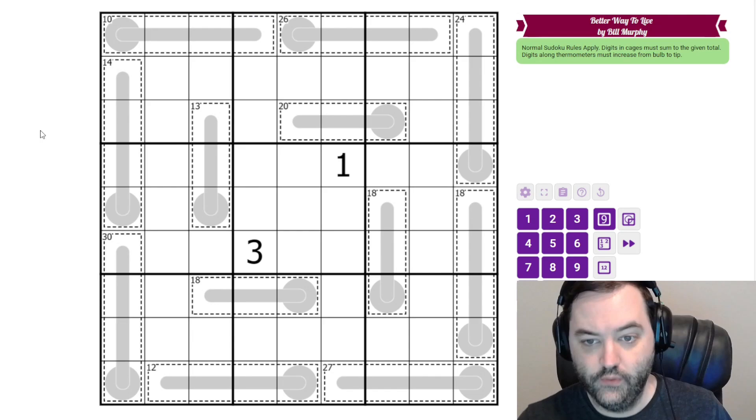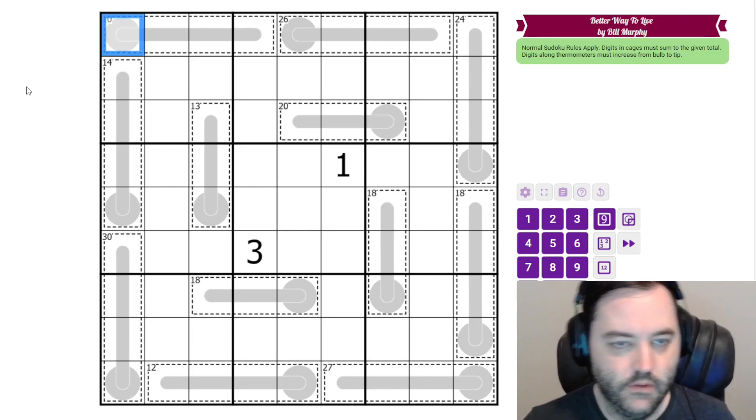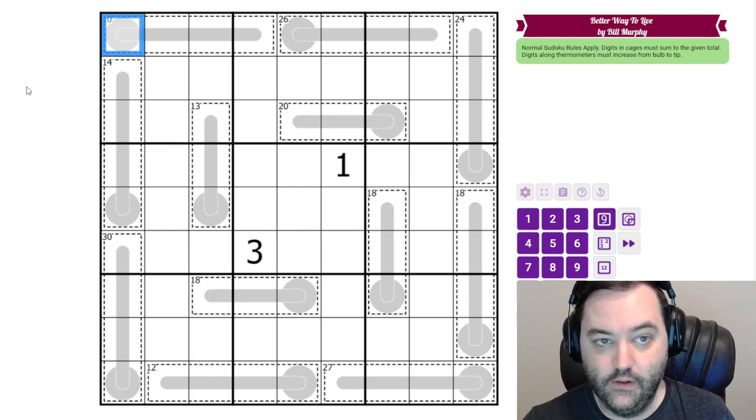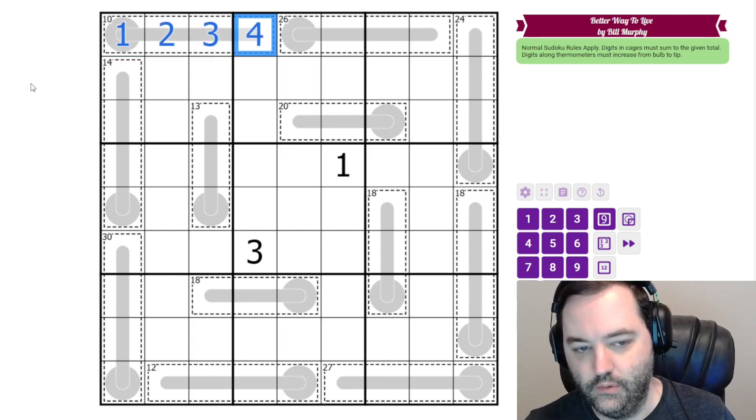And those are the rules, and we will get started in the top left, as is often the case with gas. There's only one way to make a 10 cage in four cells, that is one, two, three, four, and because of the thermo, we know the order of them. One, two, three, four.